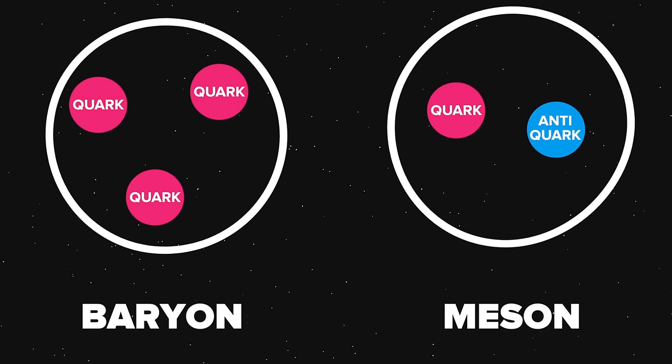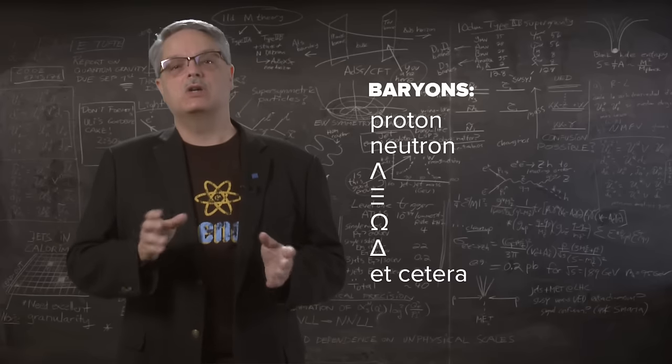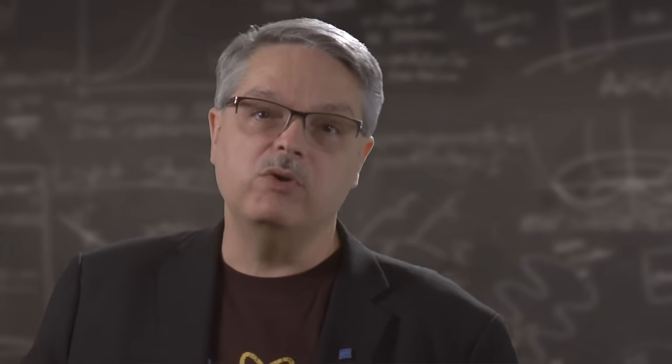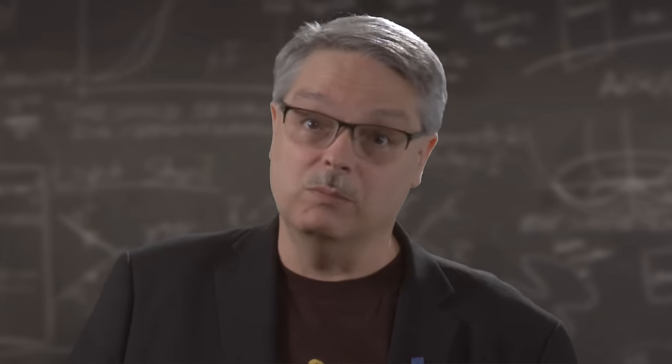Baryons and mesons are very common. For instance, protons and neutrons are examples of baryons, and the most commonly produced particle in one of our big accelerators is a pi meson. If you add up all the baryons and mesons we have discovered, the number is far more than a hundred.